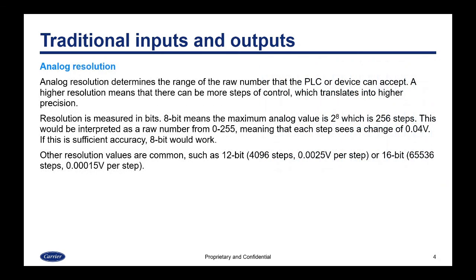An issue with analog is resolution. Analog resolution determines the range of the raw number that the PLC or device can accept. A higher resolution means there can be more steps of control, which translates into higher precision. Resolution is measured in bits. 8-bit means the maximum analog value is 2 to the power of 8, which is 256 steps, interpreted as a raw number from 0 to 255, meaning each step can see a change of 0.04 volts. Other resolution values are common, such as 12-bit with 4,096 steps or 0.0025 volts per step, or 16-bit with 65,536 steps and even finer resolution of 0.00015 volts per step.